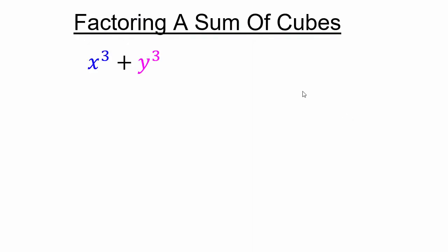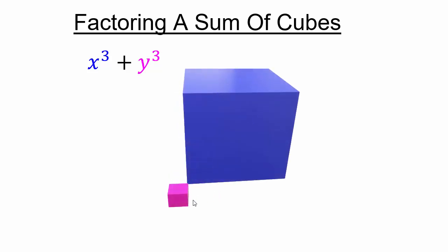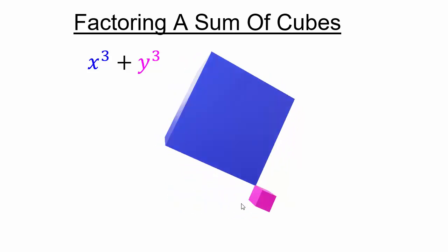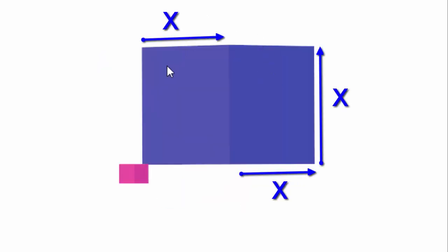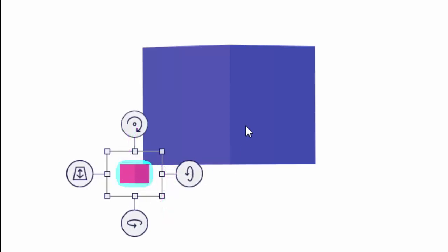Let's talk about factoring a sum of cubes, so that just means x³ + y³. How can we visualize something like that? x³ will be this big cube and y³ will be the small cube. No matter what direction you look at it from, you can see it's just one cube plus another cube. The bigger one is x by x by x, or x³, and the smaller cube is y by y by y, or y³.